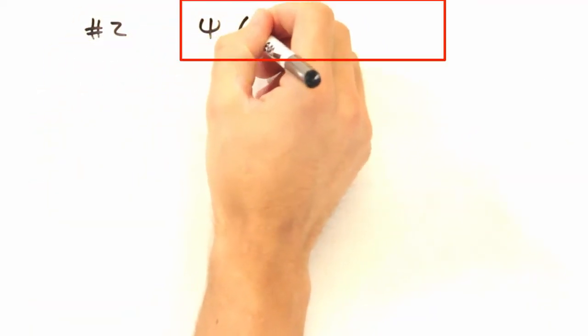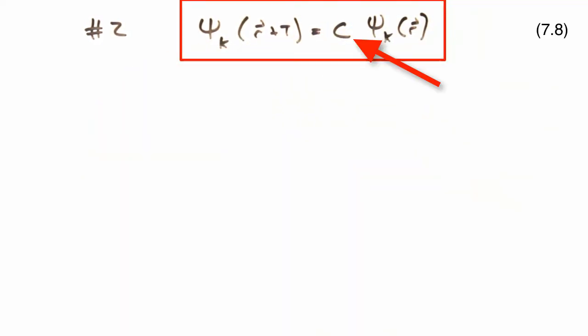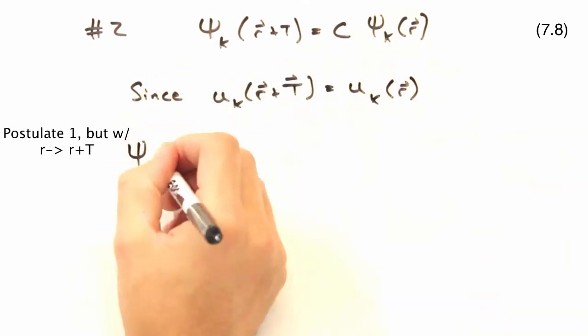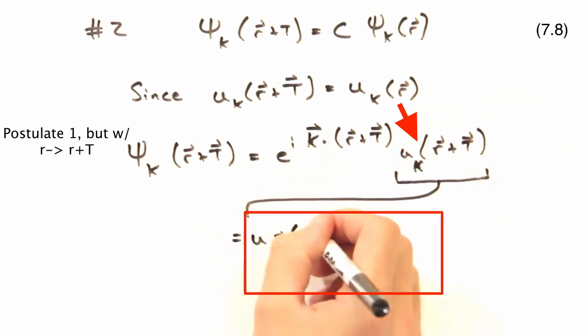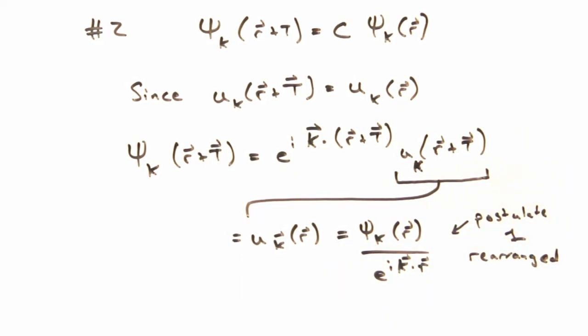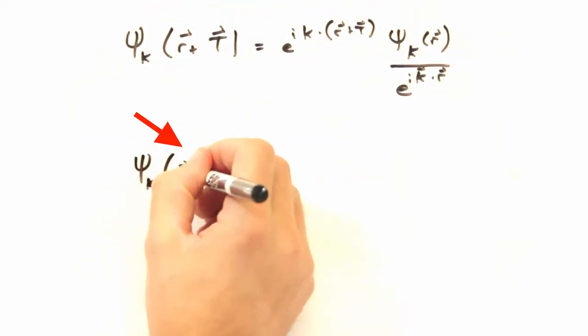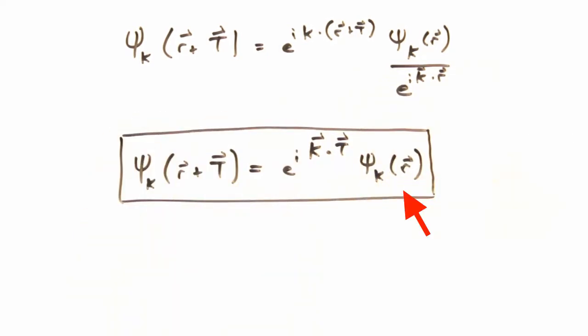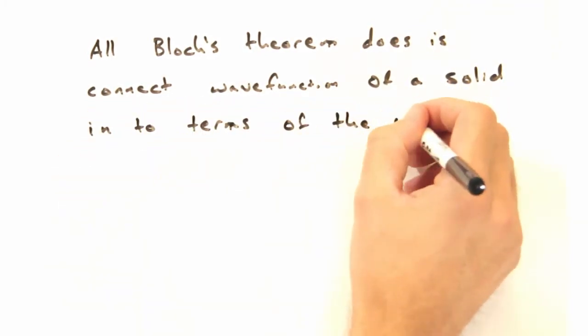The second postulate of Bloch's Theorem states that psi of r plus t will have the same form as psi of r, just with a modulation term. And since u of r plus t equals u of r, we can rewrite this as our original psi of r e to the minus i k dot r. So really, all Bloch's Theorem does is connect the wave function of solid into terms of the underlying translational symmetry.